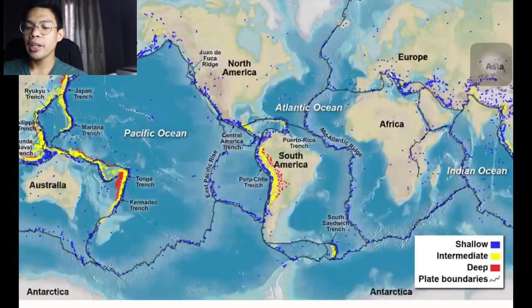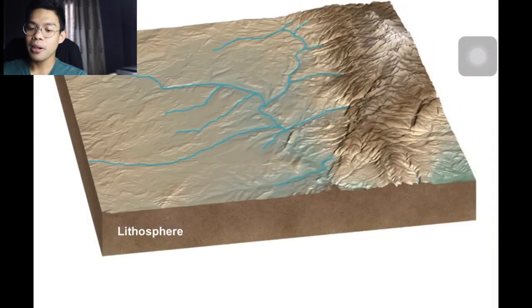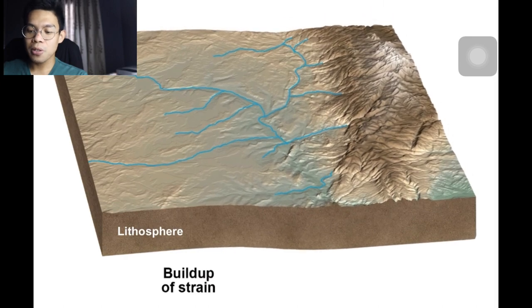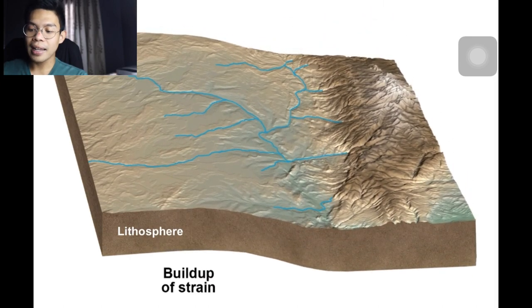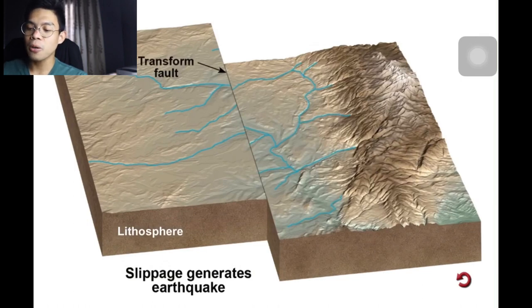Earthquakes occur in Earth's cool, rigid outermost layer called the lithosphere because Earth's plates are constantly changing position. There is movement along plate boundaries as rock in the lithosphere deforms — it bends, storing elastic energy like a stretched rubber band. Once the strength of the rock is strained beyond its breaking point, it ruptures, causing slippage along a fault. This releases stored energy as vibrations of an earthquake, and the rock on each side of the fault snaps back to its original shape — a process called elastic rebound.